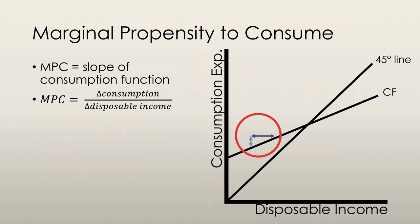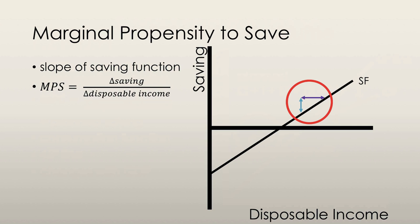Marginal propensity to consume is the fraction of a change in disposable income that is spent on consumption, and it's calculated as the slope of the consumption function — rise over run, or change in consumption divided by change in disposable income. We also have marginal propensity to save, or MPS, which is simply the fraction of a change in disposable income that is saved. It's the slope of the saving function, calculated as change in saving divided by change in disposable income. Because it's a straight line, the slope is the same regardless of where you take it on the function.